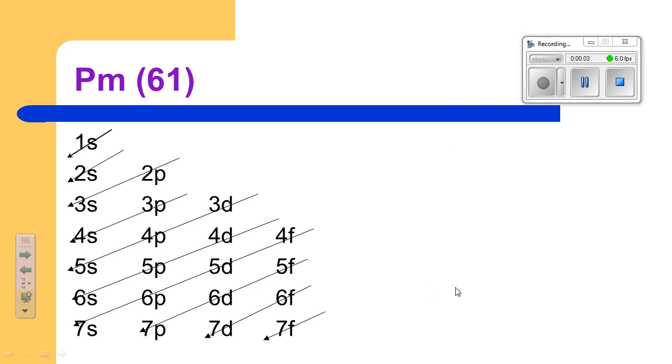In this video we're going to do the electron configuration for Prometheum. Prometheum has 61 electrons. We're going to use a diagonal rule to help us with this.